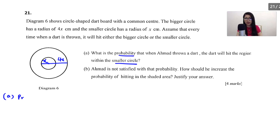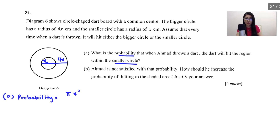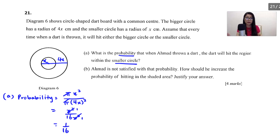The probability is the area of the smaller circle over the area of the bigger circle. So that's pi x squared over pi (4x) squared. We can cancel off pi and pi, so it becomes x squared over 16x squared. We can simplify further to get 1 over 16. That's the answer for part A.